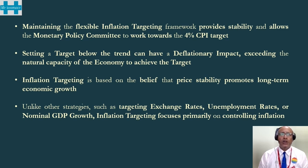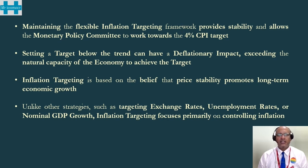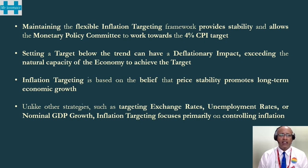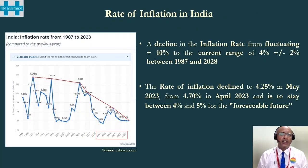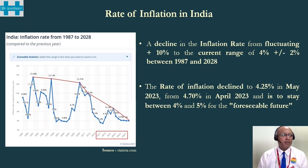Setting a target below the trend can have a deflationary impact, exceeding the natural capacity of the economy to achieve the target. Inflation targeting is based on the belief that price stability promotes long-term economic growth, unlike other strategies such as targeting exchange rates, unemployment rates, or nominal GDP growth. The image shows a decline in the rate of inflation from fluctuating at over 10 percent to the current range of 4 percent ±2 percent between 1987 and 2028. The rate of inflation declined to 4.25 percent in May 2023 from 4.70 percent in April 2023, and is expected to stay between 4 and 5 percent for the foreseeable future.